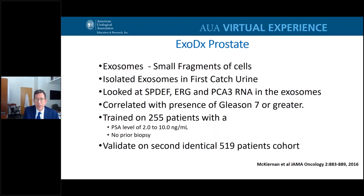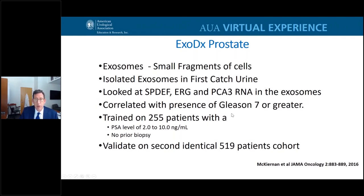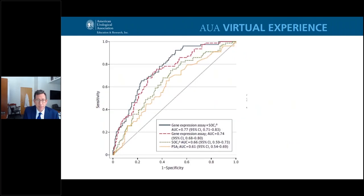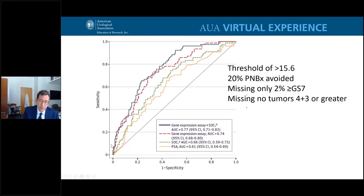ExoDx Prostate is another urine-based marker that analyzes exosomes — small cell fragments found in urine and blood — looking at a variety of genes to see whether they are elevated. The study looks not only for risk of prostate cancer but risk of Gleason 7 and above. PSA performs better than chance, but the gene expression assay clearly does a better job. At a threshold of 15.6, you could avoid about 20% of biopsies and miss only 2% of Gleason 7 and above cancers, and miss no tumors with Gleason 4+3.